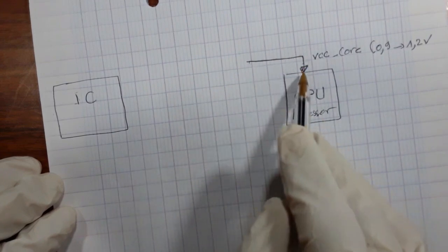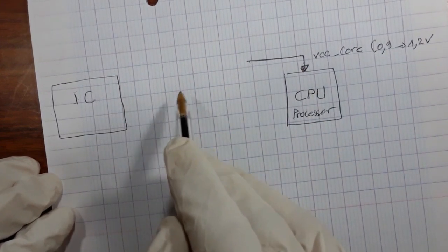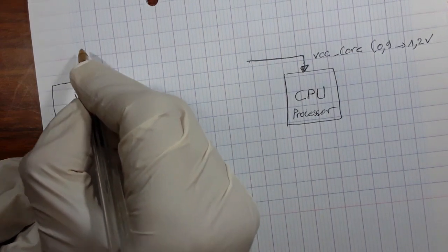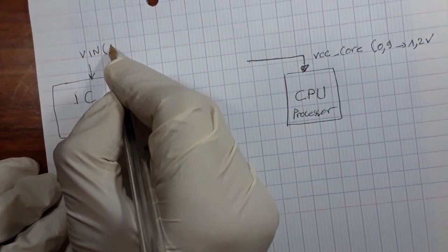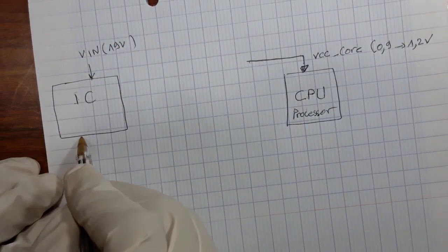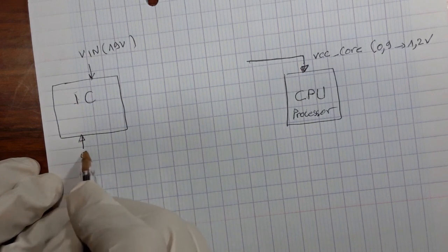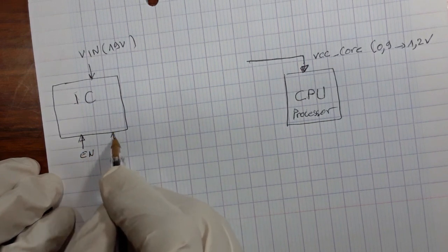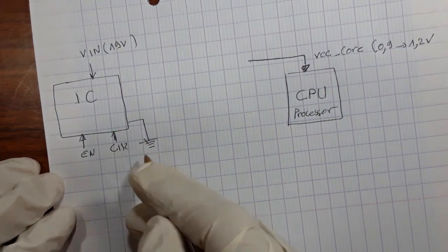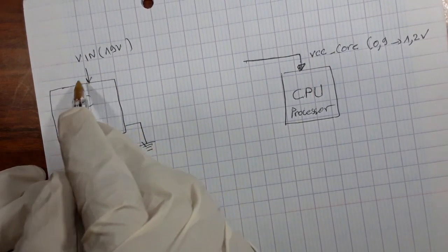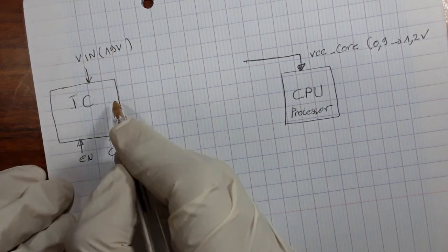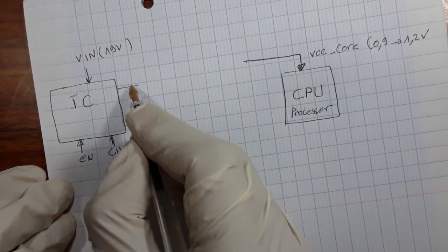In order to generate this voltage there are many steps. This IC should be powered by VN, about 19 volts. And then we have some signals, a clock, and of course a ground. So when this IC is powered up by 19 volts, it generates a control signal.